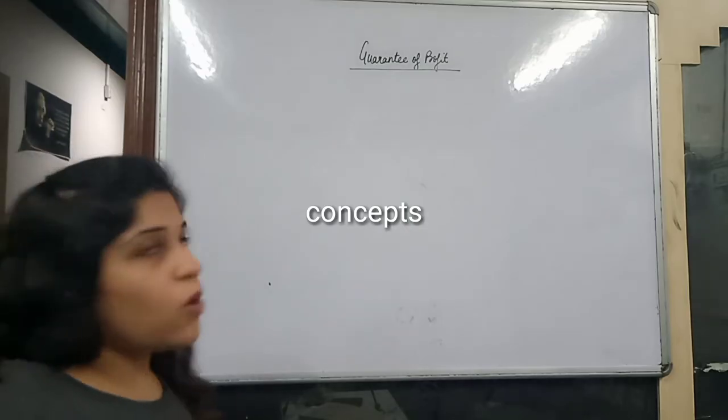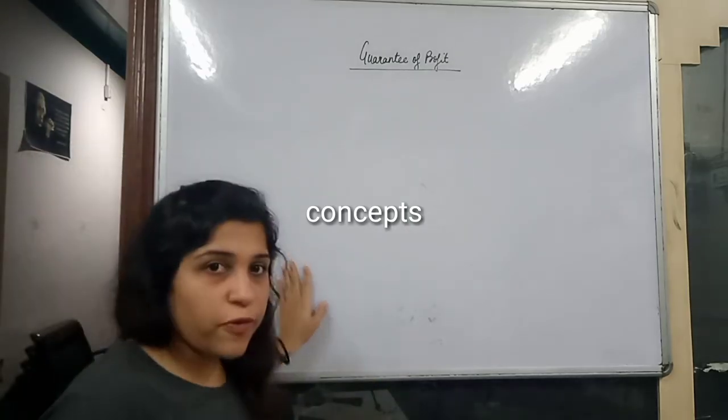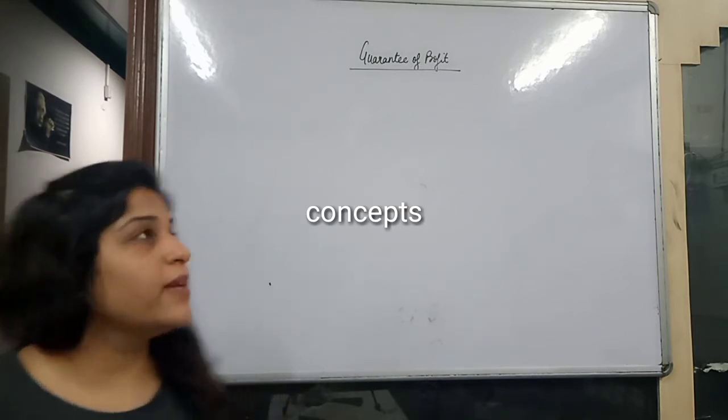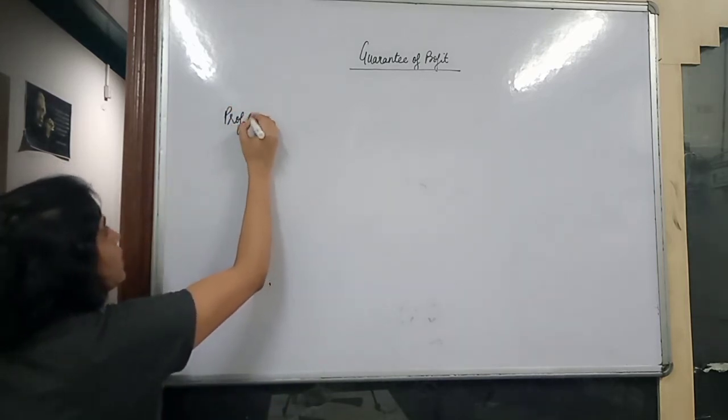So now we come to the last topic of this chapter: Guarantee of Profit. We will make an account here - a Profit and Loss Appropriation Account.